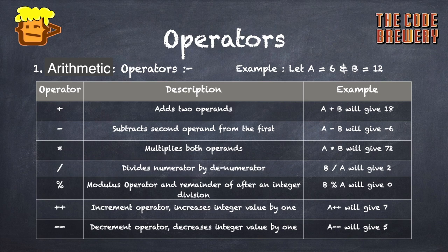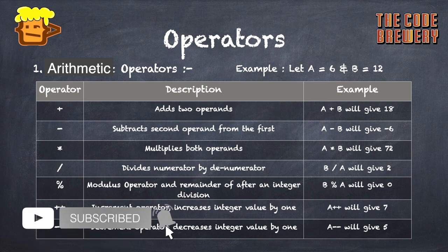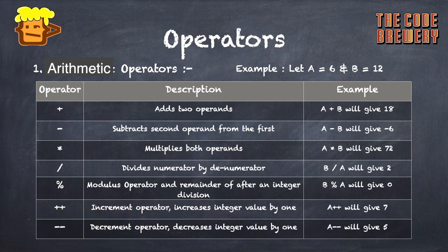The increment operator (++) increases an integer value by 1, so A++ will give us 7. The decrement operator (--) decreases the integer value by 1, so A-- will give us 5.